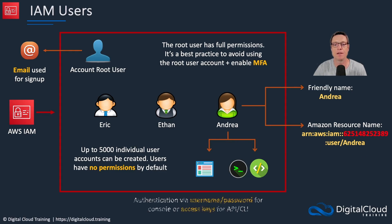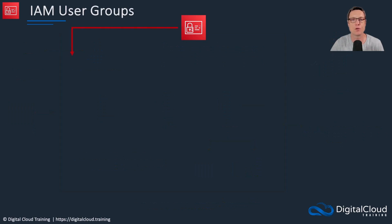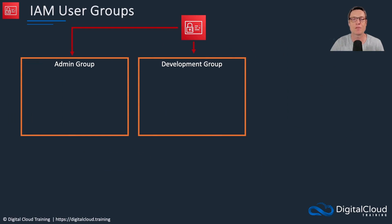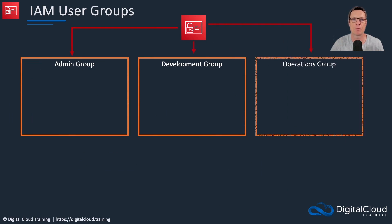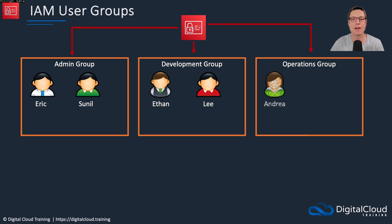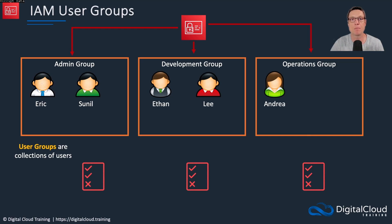Andrea can log in via different mechanisms: we've got the management console for which you use a username and password and potentially multi-factor authentication. For the command line interface and the API we can use access keys. User groups help us from a management perspective. Here we've got the admin group, the development group, and the operations group — we can add users, and some users might be in multiple groups. The groups are then used to apply permissions.